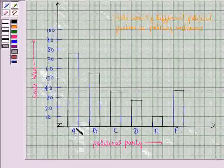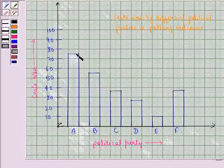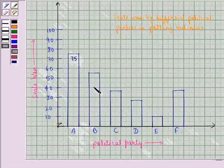We see that political party A has won 75 seats. So here we have 75. Similarly for party B it is 55, for C it's 37, for D it's 27, for E it's 10 and for F it's 37. So this is the required bar graph.